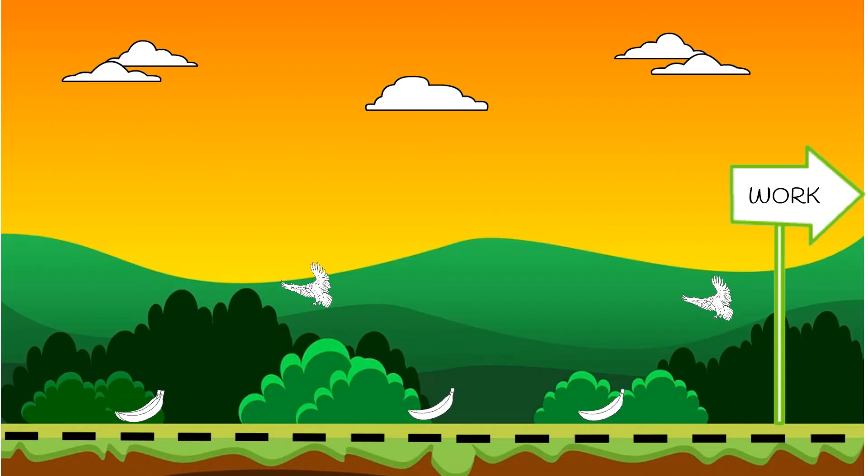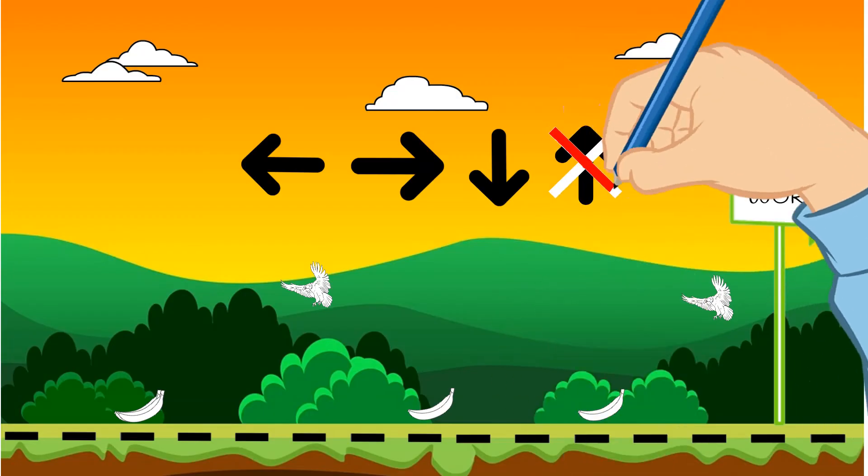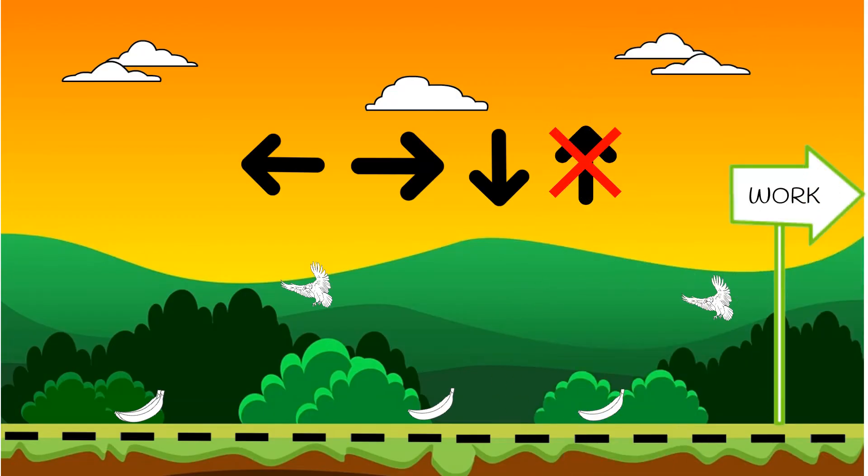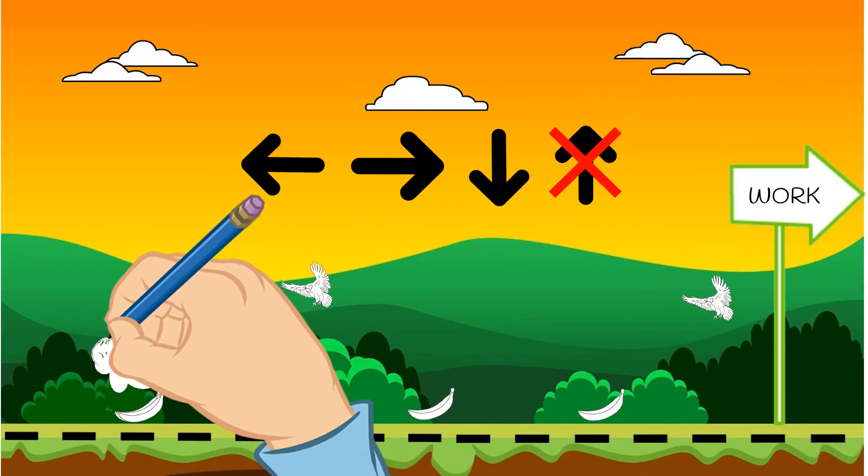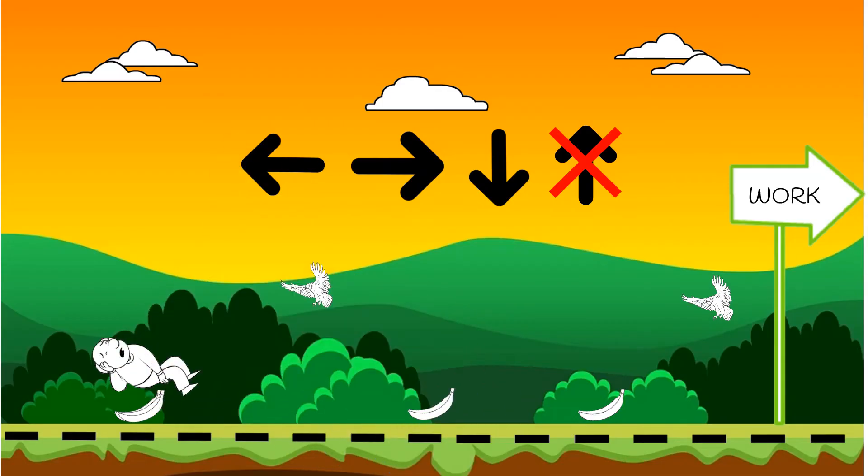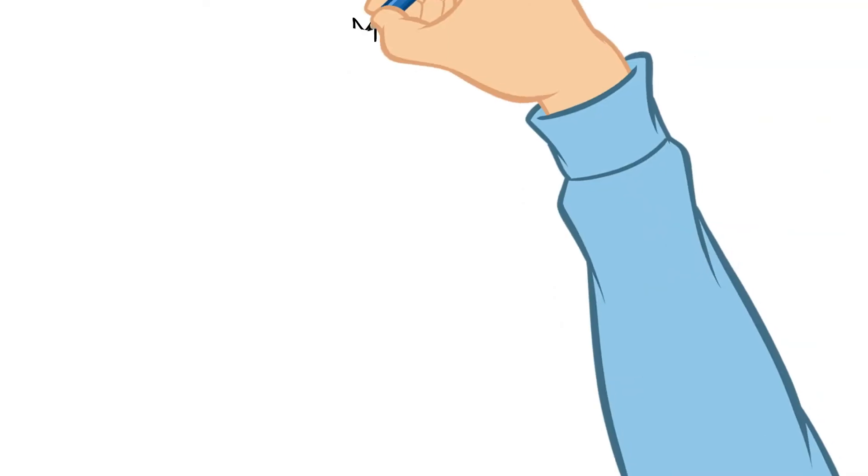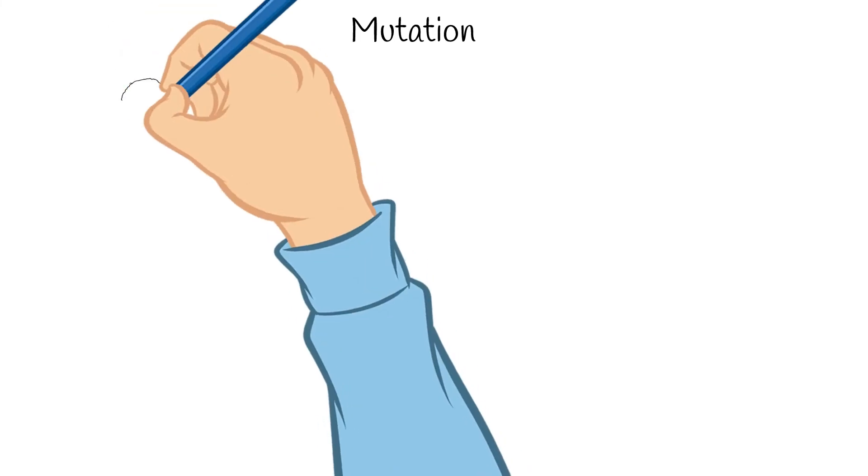Imagine if by chance our initial population of Jonathans only consisted of left, right, and down actions. Then the best Jonathan could ever do would be to make it to the first banana, which is only two steps away from the starting point. Jonathan would never make it out of the park because the parents didn't have a jumping gene, so the children would never learn to jump. That's why we need mutation, so that Jonathan can have the opportunity to try new things.